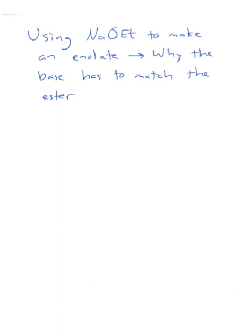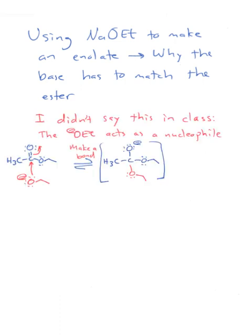Let's talk about actually making an enolate and why the base has to match the ester using sodium ethoxide. I didn't say this in class. The ethoxide can act as a nucleophile with esters. You can make a bond and generate this intermediate species, which according to mechanism will lose ethoxide to make this product.